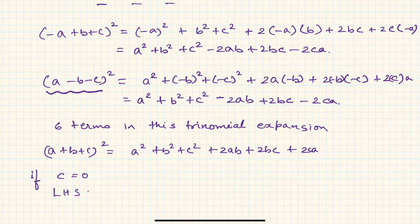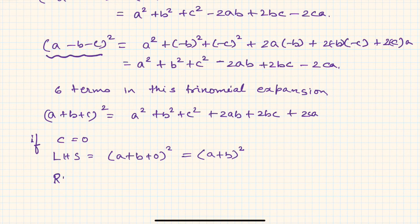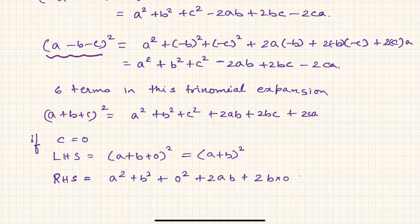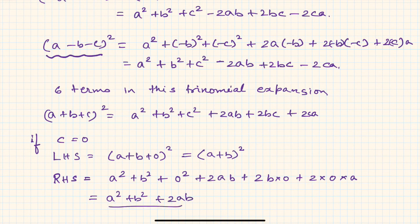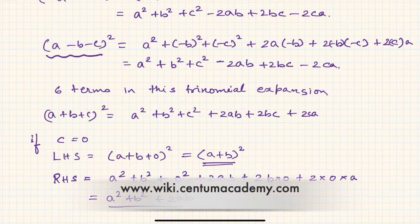If c = 0, the left-hand side becomes (a + b + 0)² = (a + b)². On the right-hand side: a² + b² + 0² + 2ab + 2b·0 + 2·0·a = a² + b² + 2ab. So the trinomial identity reduces to the binomial identity, which is a nice way to verify it. We will be solving problems on the trinomial identity in the next session.